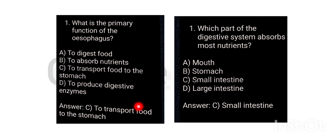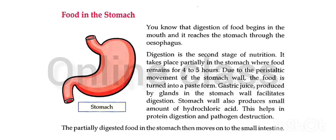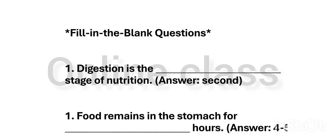What is the primary function of the esophagus? To transfer food to the stomach. What is peristalsis? Peristalsis is the wave-like movement of muscles in the esophagus that moves food toward the stomach. What type of tissue makes up the esophagus? It is made of muscular tissue.